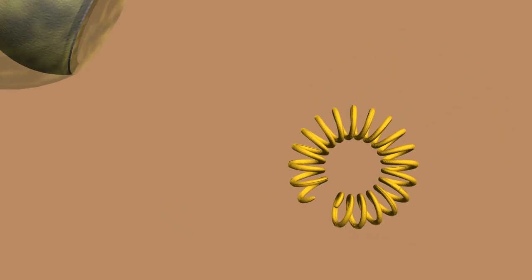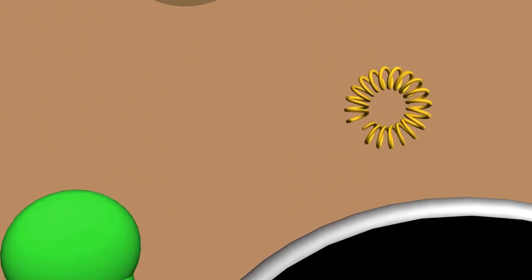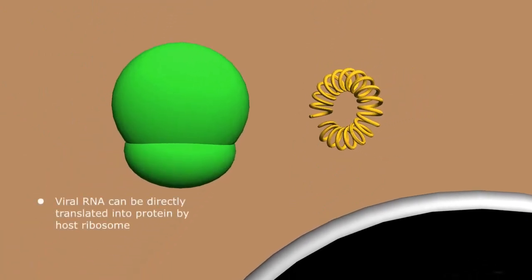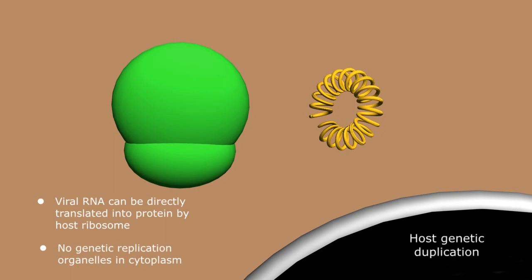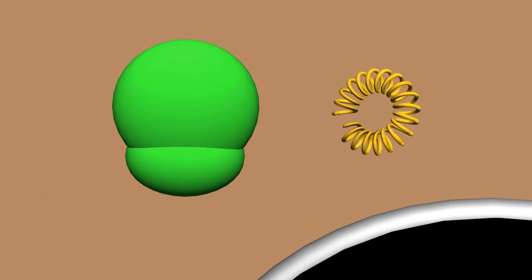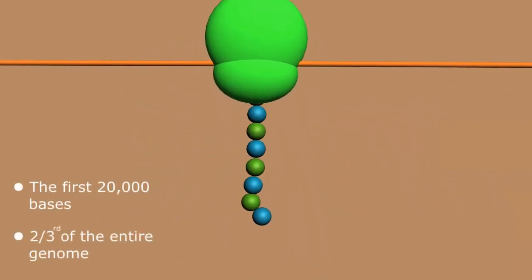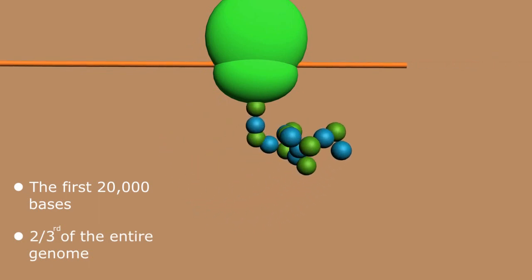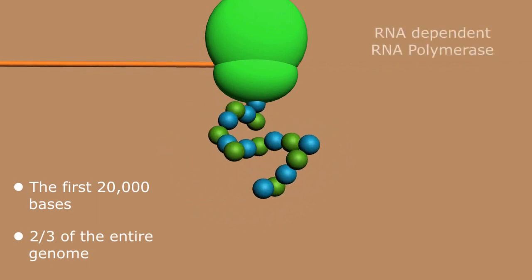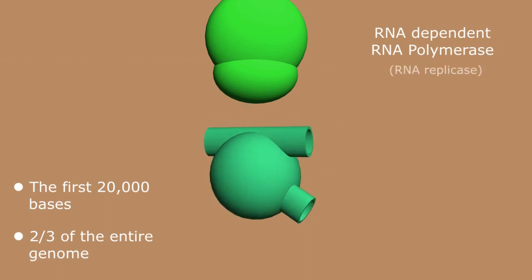So the single strand of RNA from the virus can be read directly by our ribosome to make proteins, but there is no way to use the host cell organelles to actually replicate the genetic code to make more viral particles. All our DNA duplication takes place in the confines of the nucleus, isolated from the cytoplasm. Fortunately for the virus — and unfortunately for us — the virus has figured this out. The first 20,000 bases, two-thirds of the entire genetic code, are used in the production of a complex protein molecule called RNA-dependent RNA polymerase, or RNA replicase.